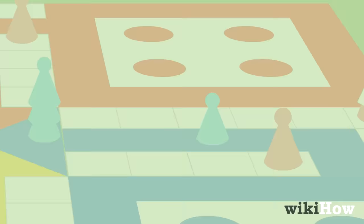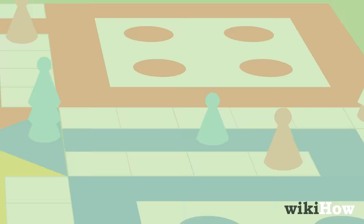The first player to get all four of their tokens to the home base wins and play resumes to determine the second, third, and fourth place players.